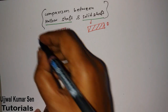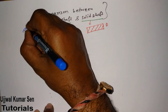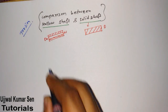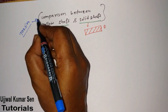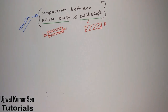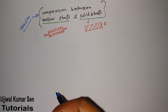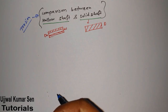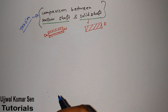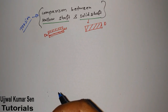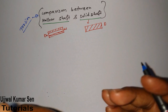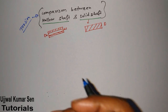This is a topic of torsion, so the torsion equation will be used to compare the hollow shaft and the solid shaft. It is really simple, and if you know what torsion is, then you can definitely understand this.